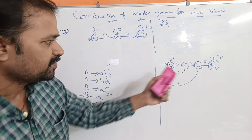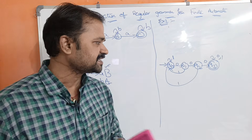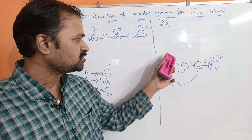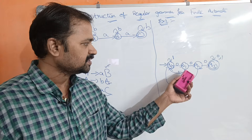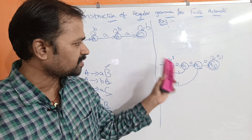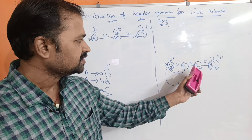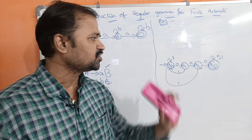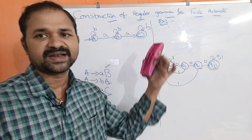Now let us see the second example. There are four states: q0, q1, q2, q3. The transitions are: q0 on 1 goes to q0, q0 on 0 goes to q1. q1 on 0 goes to q2, q1 on 1 goes to q0. q2 on 0 goes to q3, q2 on 1 goes to q3.